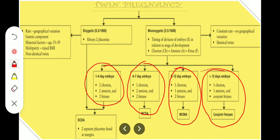So we may have DCDA with 2 separate placentas fused at the margin. If division occurs at 4 to 7 days we may have MCDA. If division is at 8 to 14 days we may have monochorionic monoamniotic. If division is at more than 12 days then we may have conjoined twins.